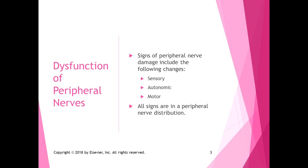With dysfunctional peripheral nerves, when you have peripheral nerve damage, it can include sensory changes, autonomic changes, and motor changes. All of these signs show up in a peripheral nerve distribution. Sensory changes can be decreased or abnormal sensation like hyperalgesia, dysesthesia, and paresthesia. Hyperalgesia is extra sensitivity, dysesthesia is painful abnormal sensation, and paresthesia is non-painful abnormal sensation.